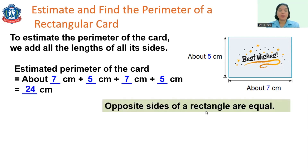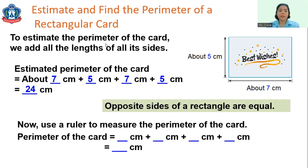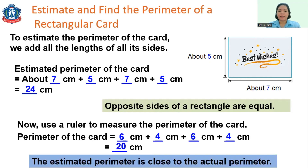The total estimated perimeter is 24 centimeters. That is what we call opposite sides — opposite sides of rectangles are equal. If we use a ruler, the actual measurement shows the longer side is 6 cm and the width is 4 cm. So 6 + 4 + 6 + 4 = 20 centimeters.